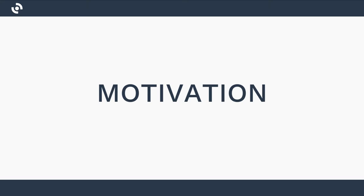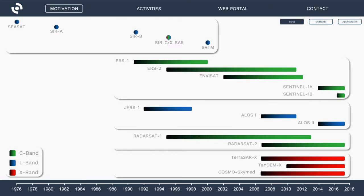We realized that there is a huge amount of data available, starting from the mid-70s with missions like SEASAT, and ranging to more continuous and ongoing missions like the European missions ERS, Envisat, Sentinel, or the Japanese missions JERS, ALOS-1, ALOS-2, Canadian missions like Radarsat-1 or 2, or German and Italian missions in X-band like TerraSAR-X, TanDEM-X, and COSMO-SkyMed. We have a vast amount of data with continuous time series over multiple frequency bands, now also freely available in the case of Sentinel-1A and 1B.